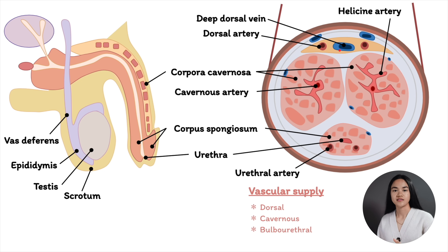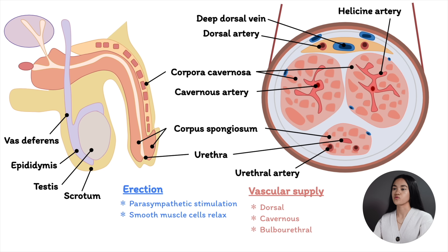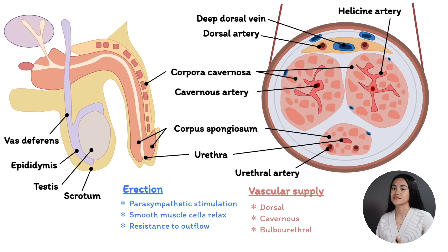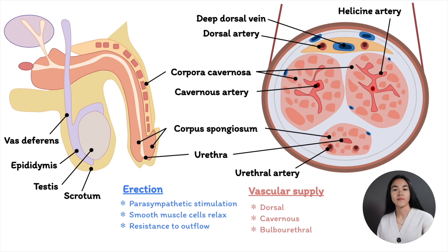Erection is caused by parasympathetic stimulation, which results in the relaxation of the smooth muscle cells of the corpora cavernosa. Arterial flow increases — the arteries that carry blood to the penis dilate — and blood fills the corpora cavernosa, causing distension of the penis. There's increased resistance to outflow because the veins are compressed against the tunica albuginea, reducing outflow of blood. In the flaccid state, the spaces are collapsed, the tissues condensed, and smooth muscle cells are contracting to allow only a small amount of arterial flow. The regulation of the smooth muscle cells of the penis is therefore important in erection.